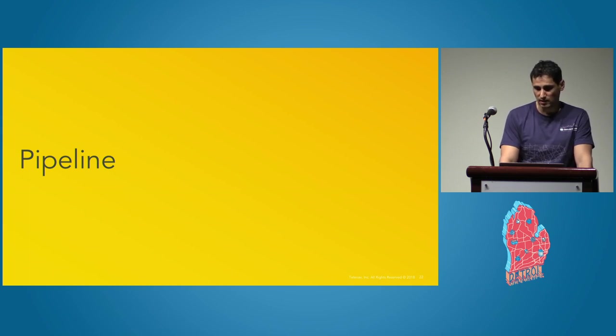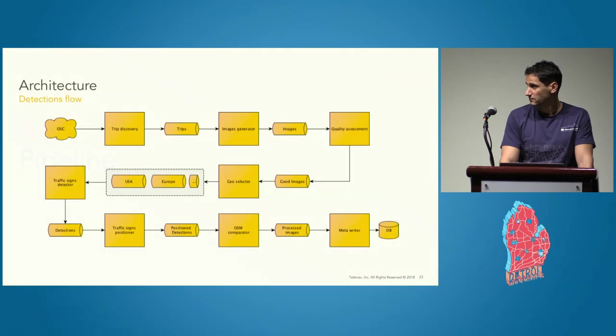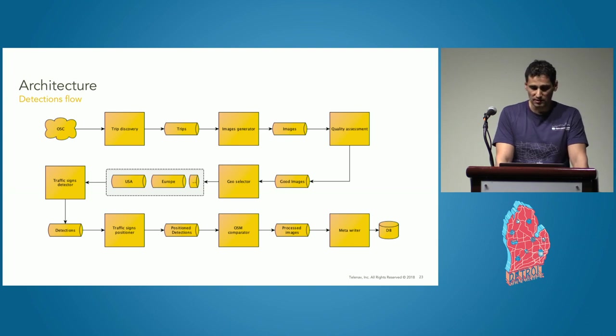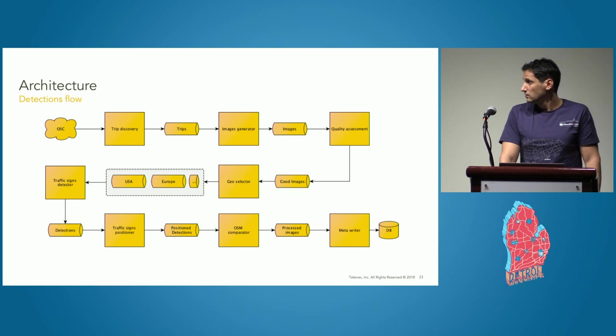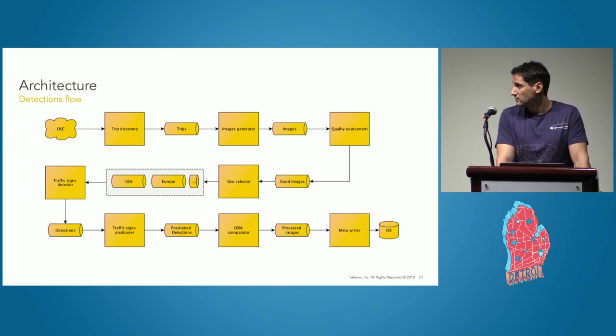On the detection flow, which is the first flow we are using, we can see that we have addressed concurrency, distribution, performance, and scalability resulting in microservices architecture. This slide presents the flow starting with the component which is notified when a new trip arrives in OpenStreetCam, up to the moment when the position and detection are stored in the database. We can also see on the pictures the components which were presented previously, like traffic signs detector, quality assessment component, OSM comparator, traffic sign positioning, and so on.